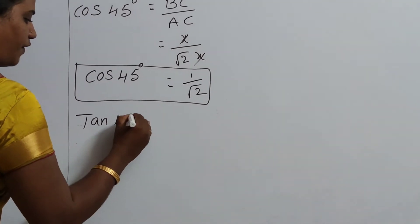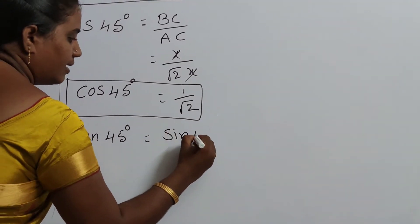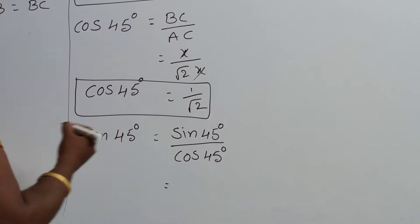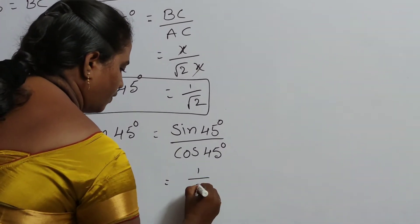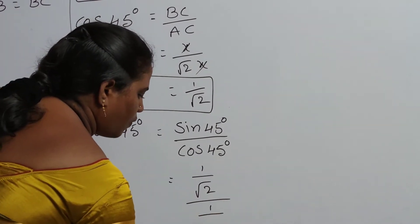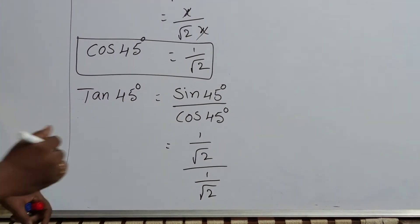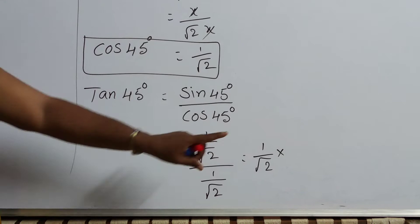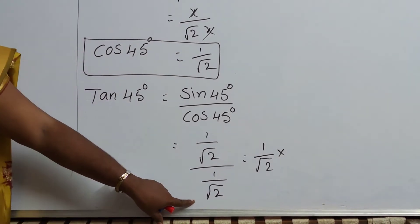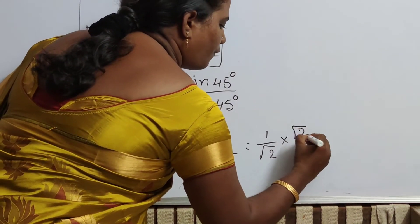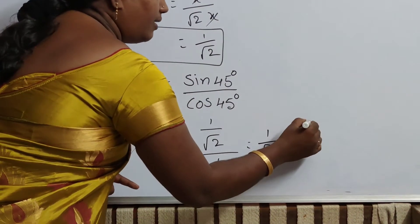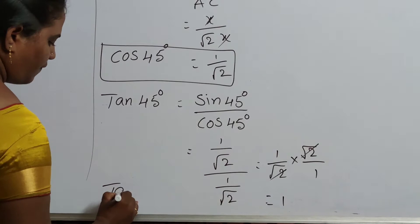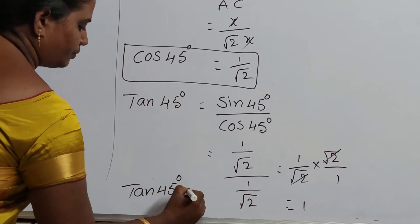Now find tan 45 degrees. Tan 45 degrees means sin 45 degrees by cos 45 degrees. Sin 45 equals 1 by root 2 and cos 45 equals 1 by root 2. These two are in fraction form, so the division symbol converts to multiplication and we write the reciprocal of 1 by root 2, which is root 2 by 1. Root 2 cancels, giving 1 by 1, so tan 45 degrees equals 1.